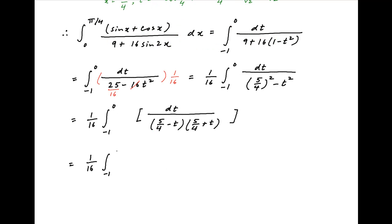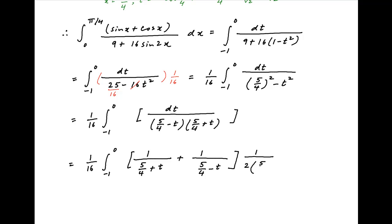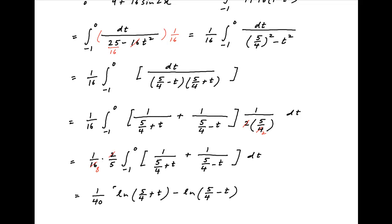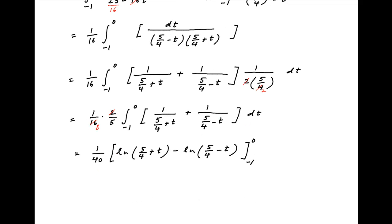Using partial fractions, the integrand becomes 1 upon (5 upon 4 plus t) plus 1 upon (5 upon 4 minus t), multiplied by 1 upon (2 times 5 upon 4). This gives 1 upon 16 times 2 upon 5 times the integral from minus 1 to 0 of [1 upon (5 upon 4 plus t) plus 1 upon (5 upon 4 minus t)] dt. This simplifies to 1 upon 40 times [ln(5 upon 4 plus t) minus ln(5 upon 4 minus t)] evaluated from minus 1 to 0.